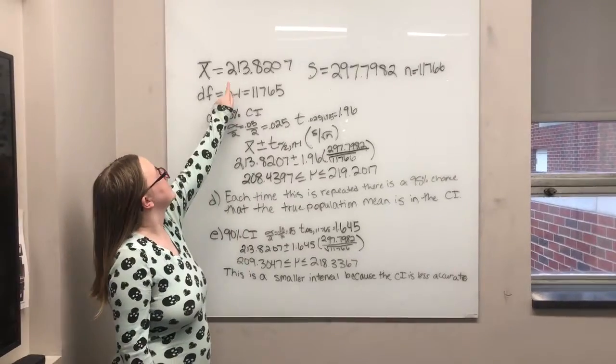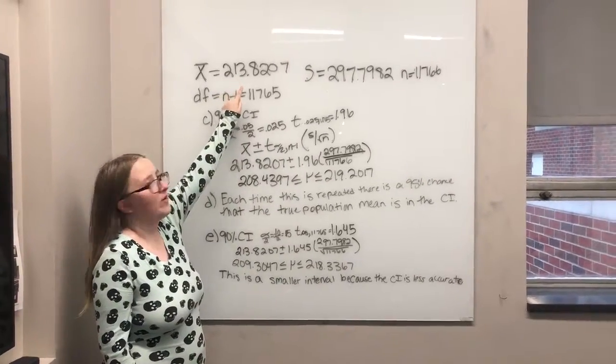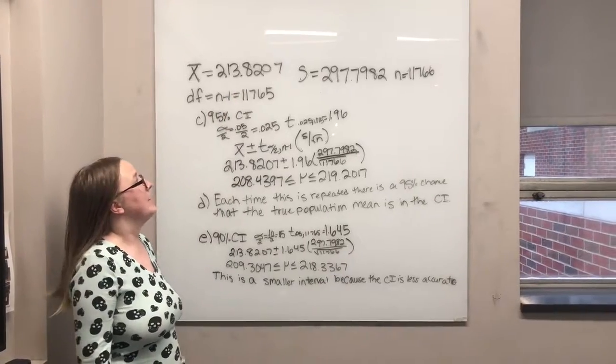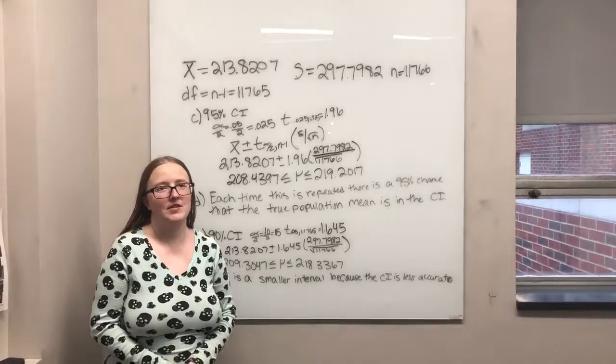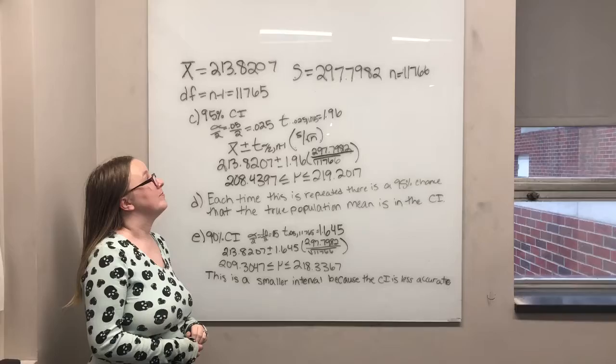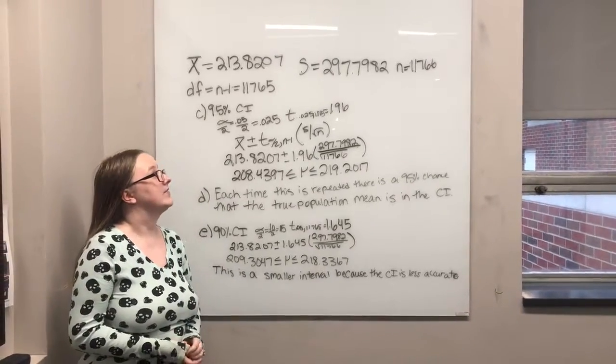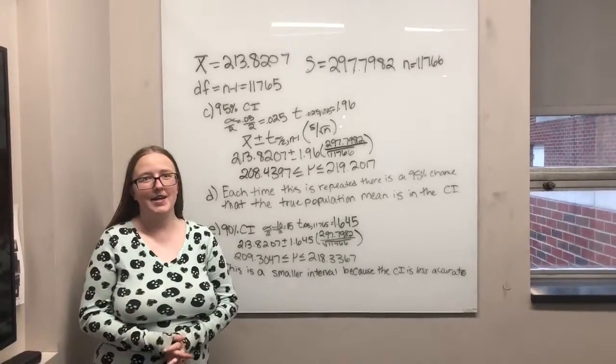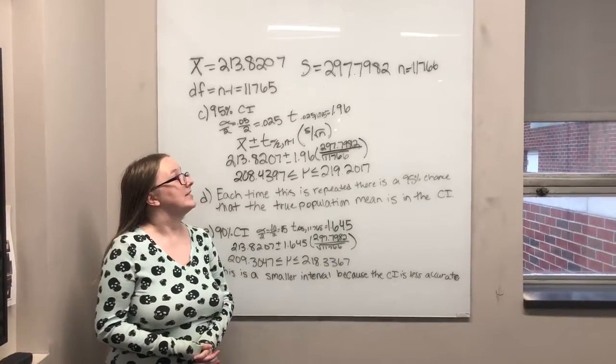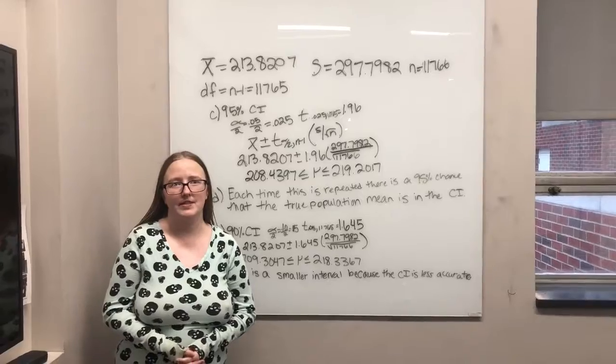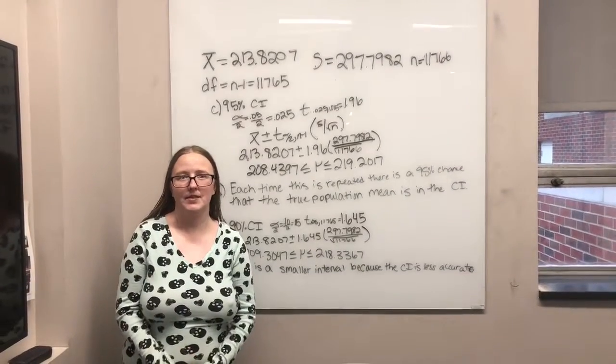So our mean was 213.8207, our standard deviation was 297.7982, and the size of the sample was 11,766, which means that the degrees of freedom was one less than that.